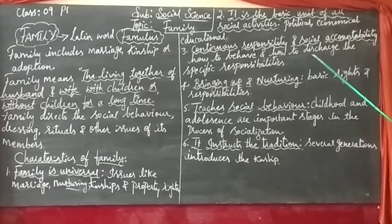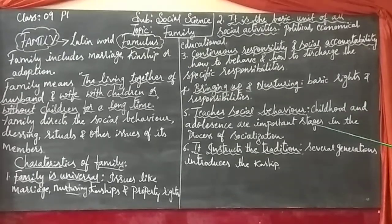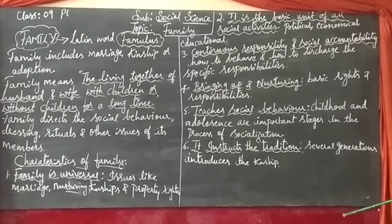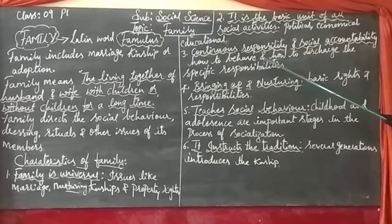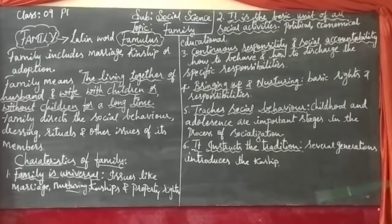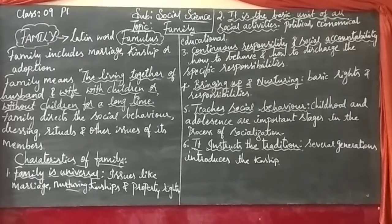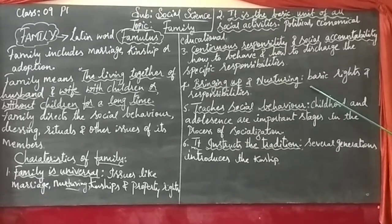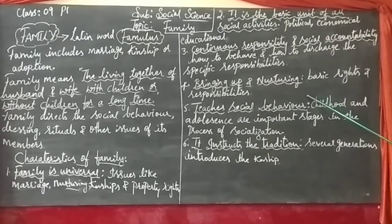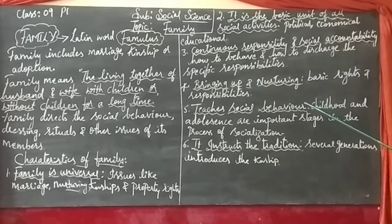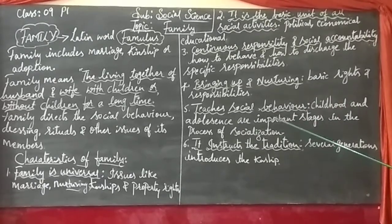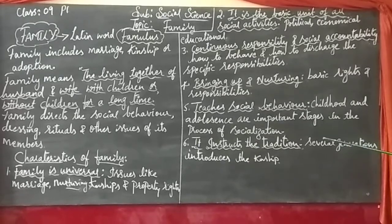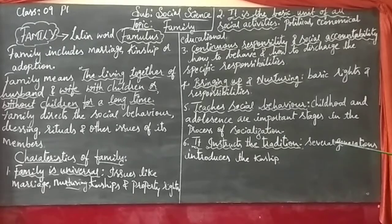The third characteristic is continuous responsibility and social accountability. The family teaches members how to behave. We have been brought up by our parents — they teach us the difference between good and bad. If we go on the wrong way, they correct us and teach us good behavior. Fourth: Bringing up and nurturing. Nurturing means care and encouragement. Our parents care so much for us — if a child goes the wrong way, they try to correct it in a very good way.